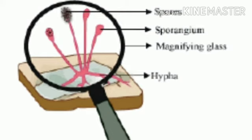Some plants like bread mold reproduce by spore formation. Look at the sporangium and the spores inside it through a magnifying glass.